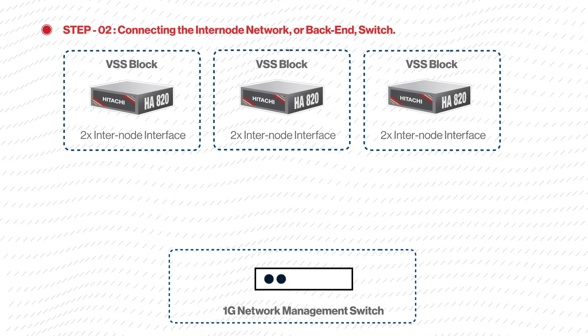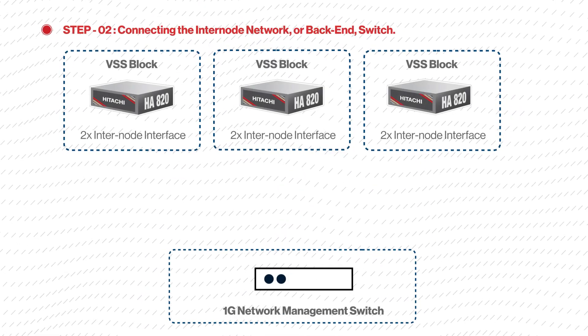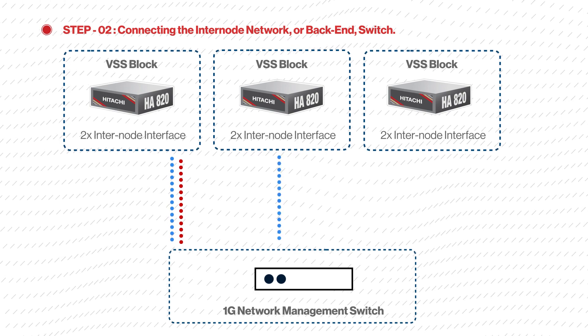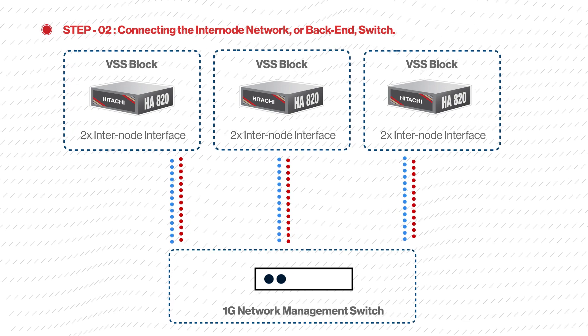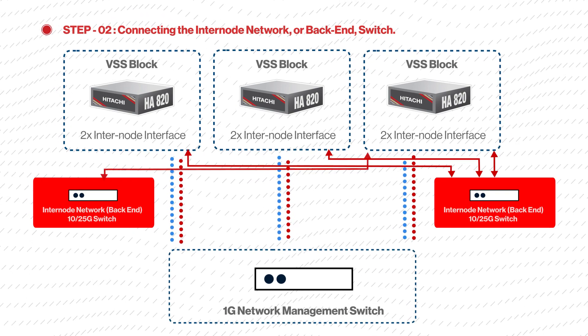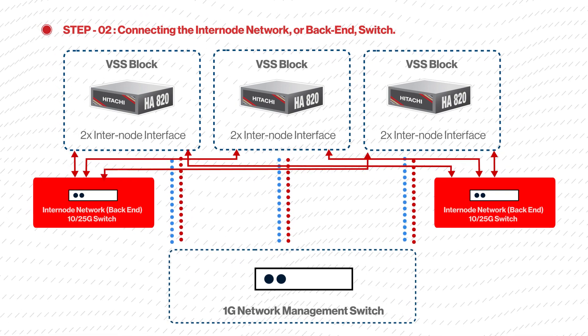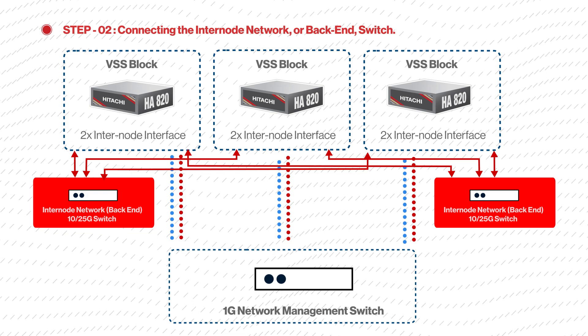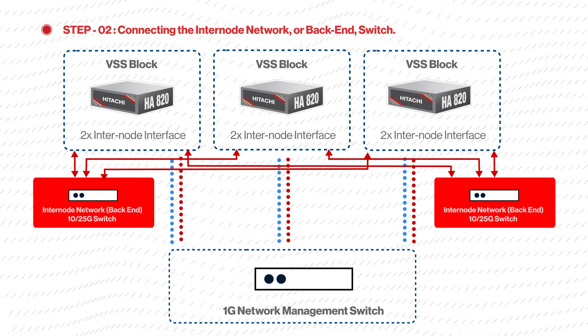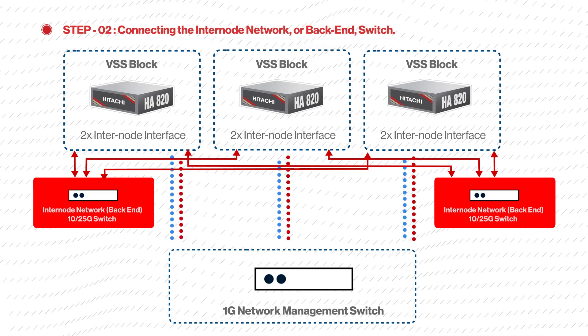Step 2: connecting the internode network, or back-end, switch. Next, we connect the VSS Block nodes to each other with a 10GB or 25GB Ethernet network using one or more switches.